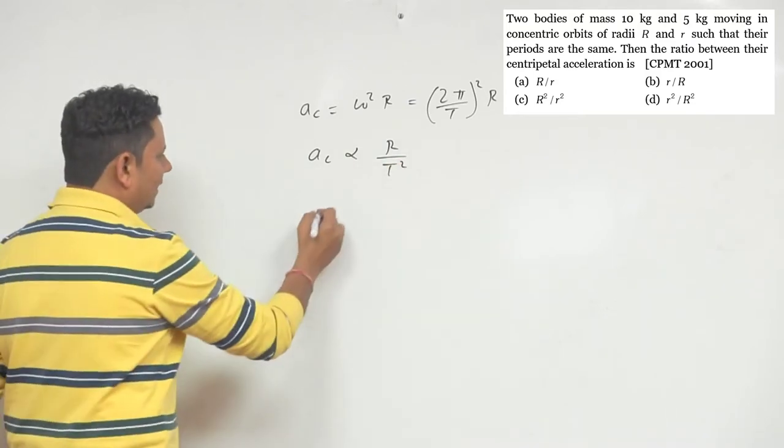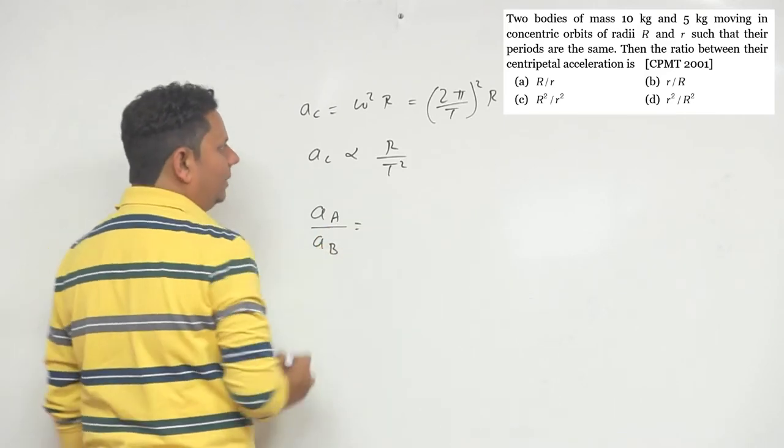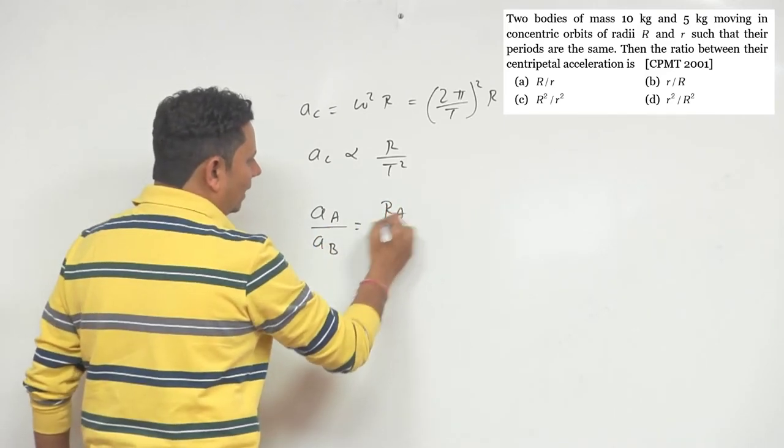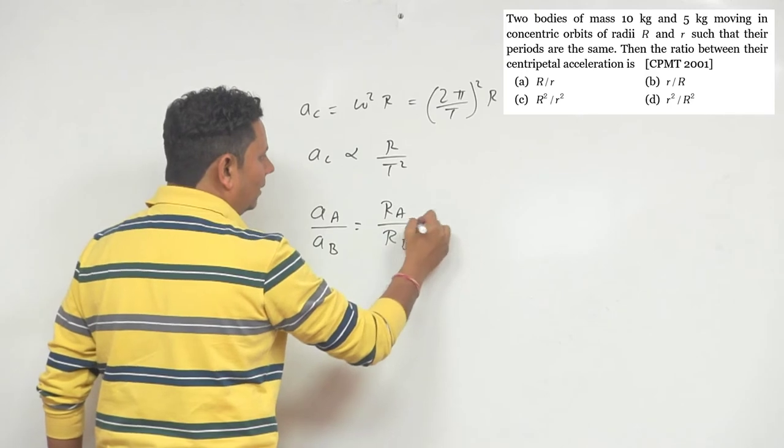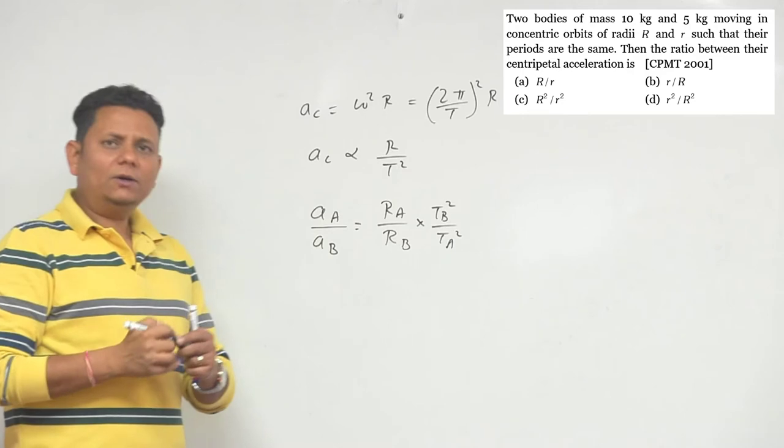Now in this case we can say centripetal acceleration of A divided by centripetal acceleration of B will be equal to r_A divided by r_B multiplied by T_B square divided by T_A square.